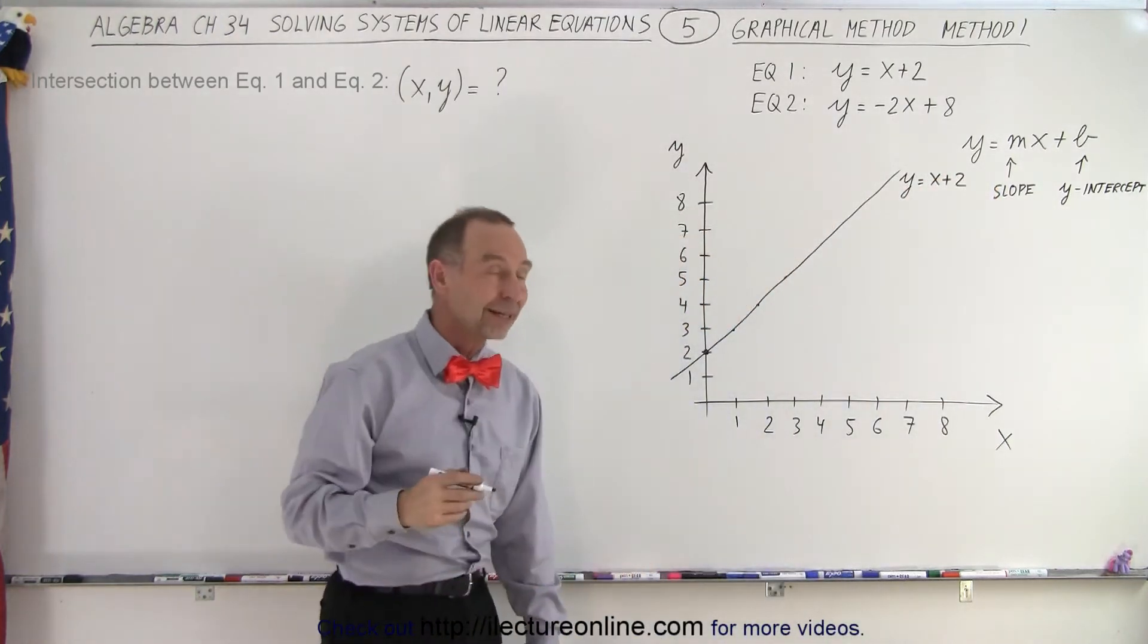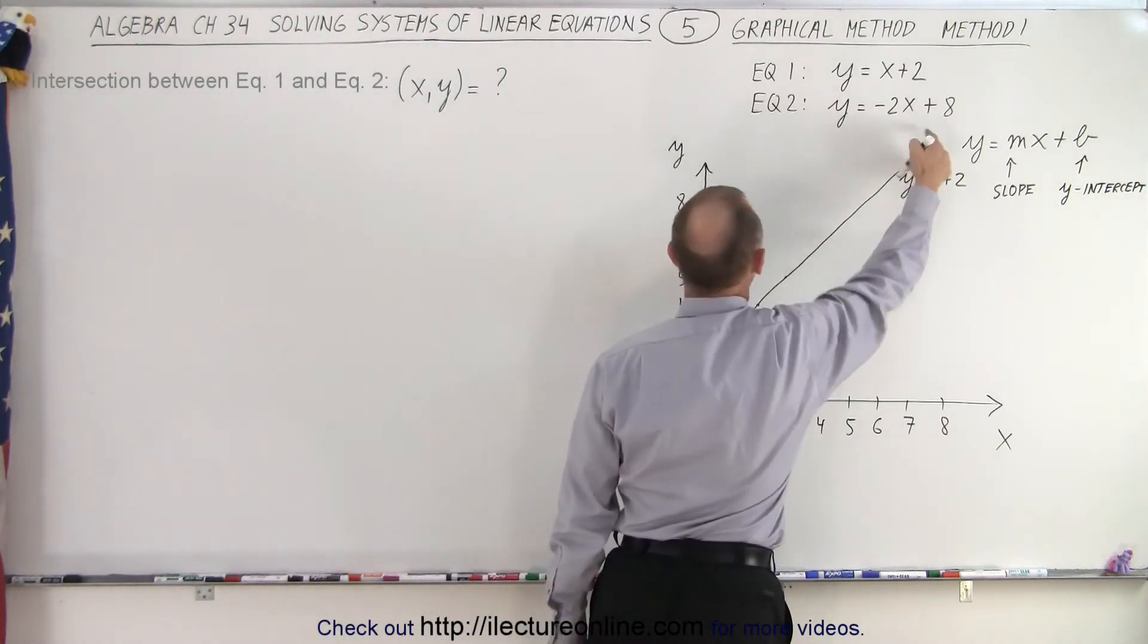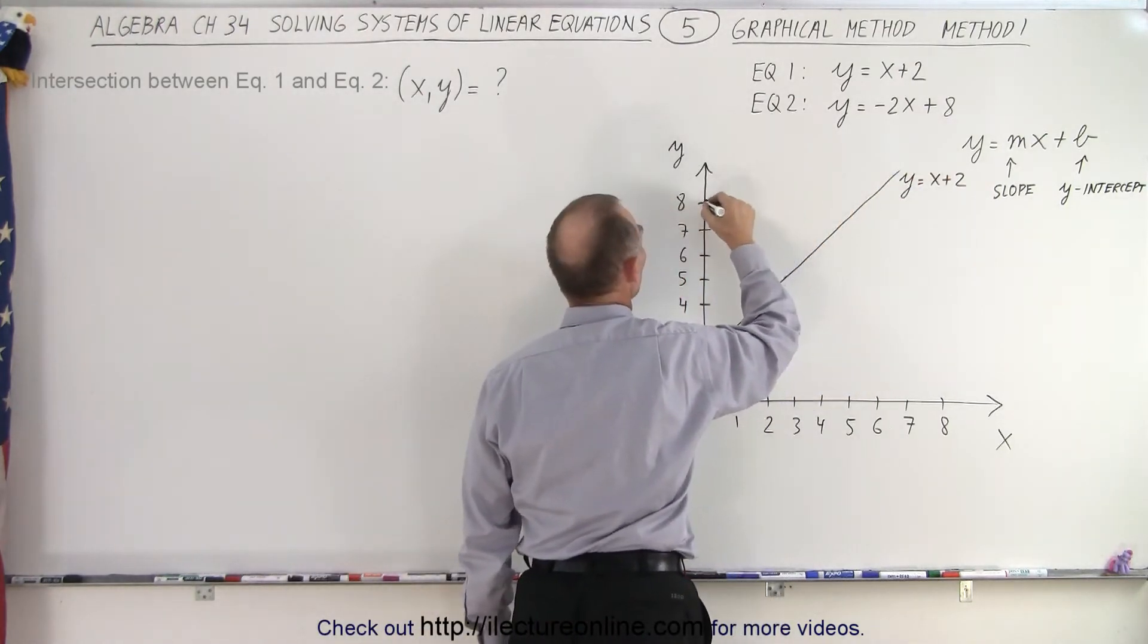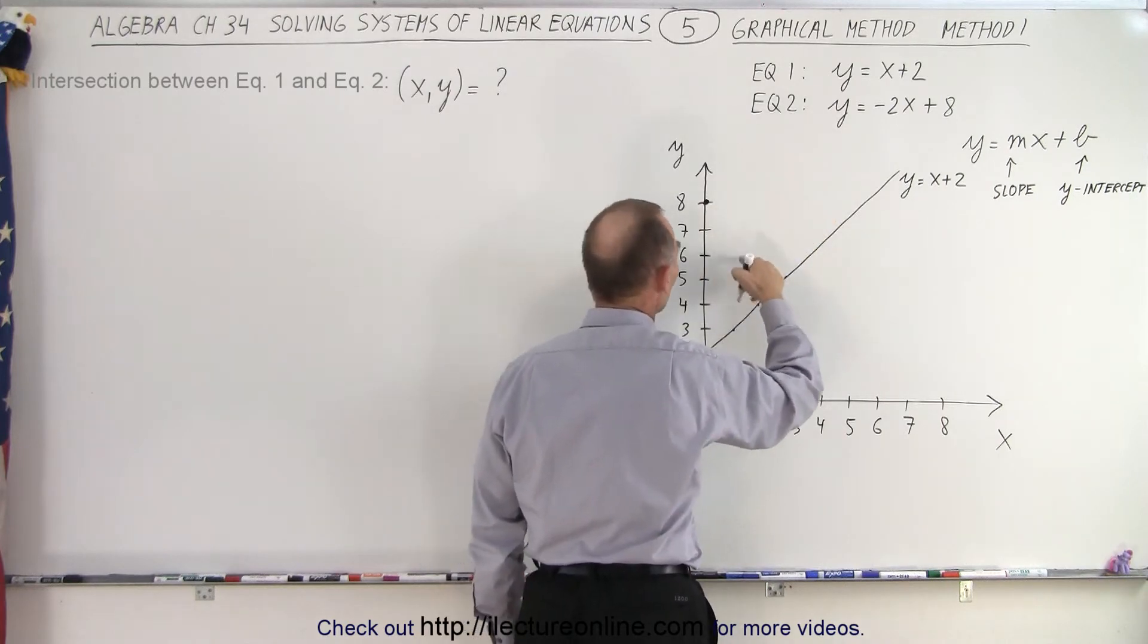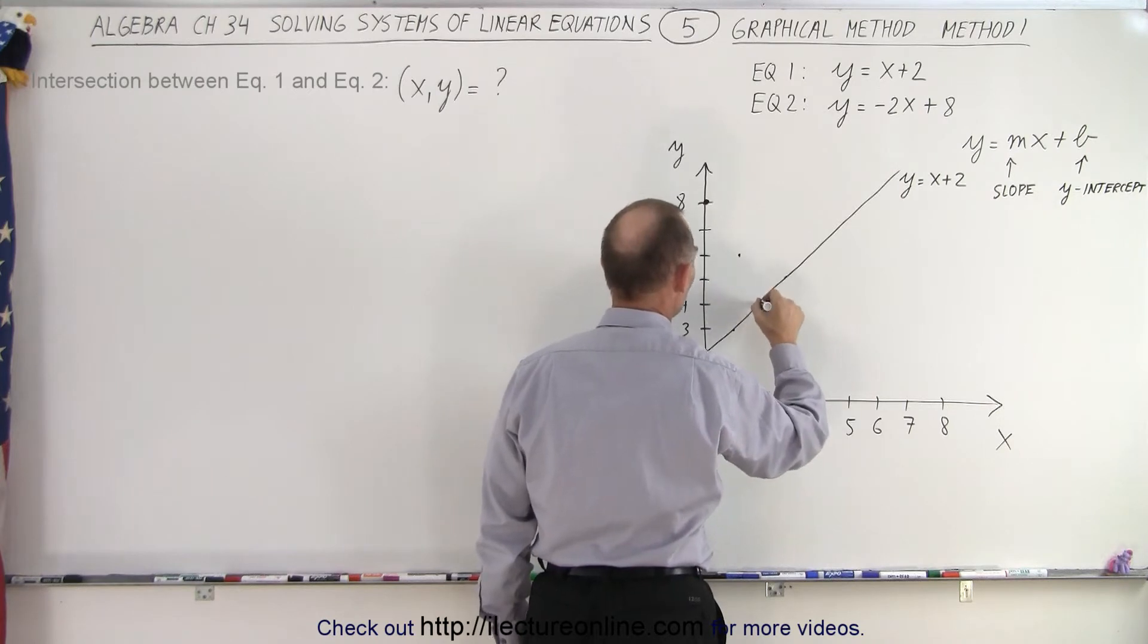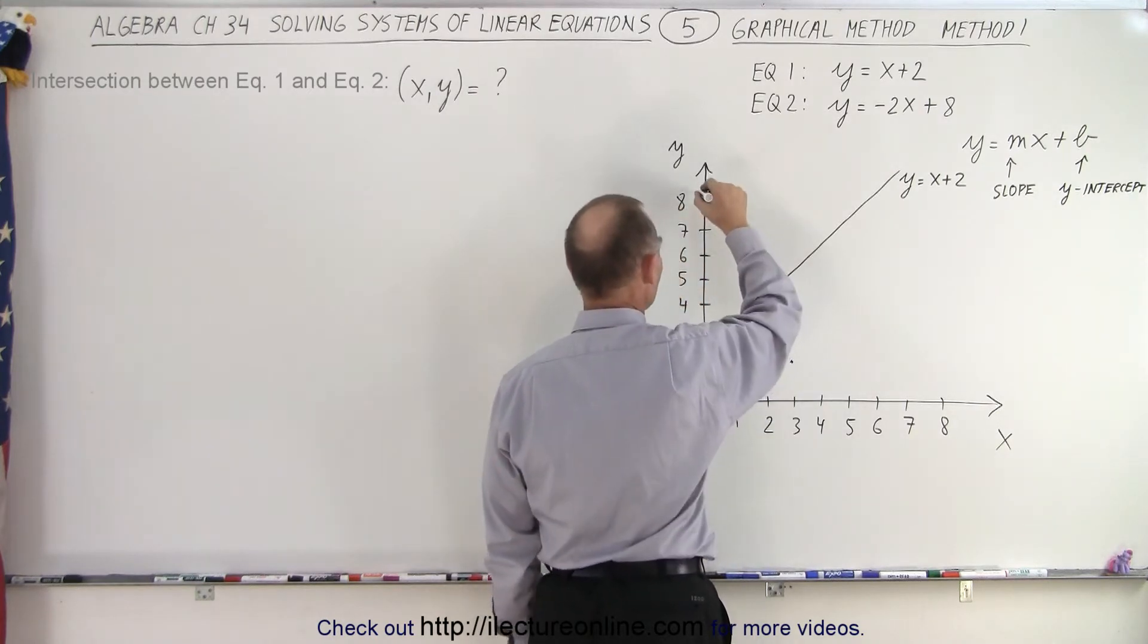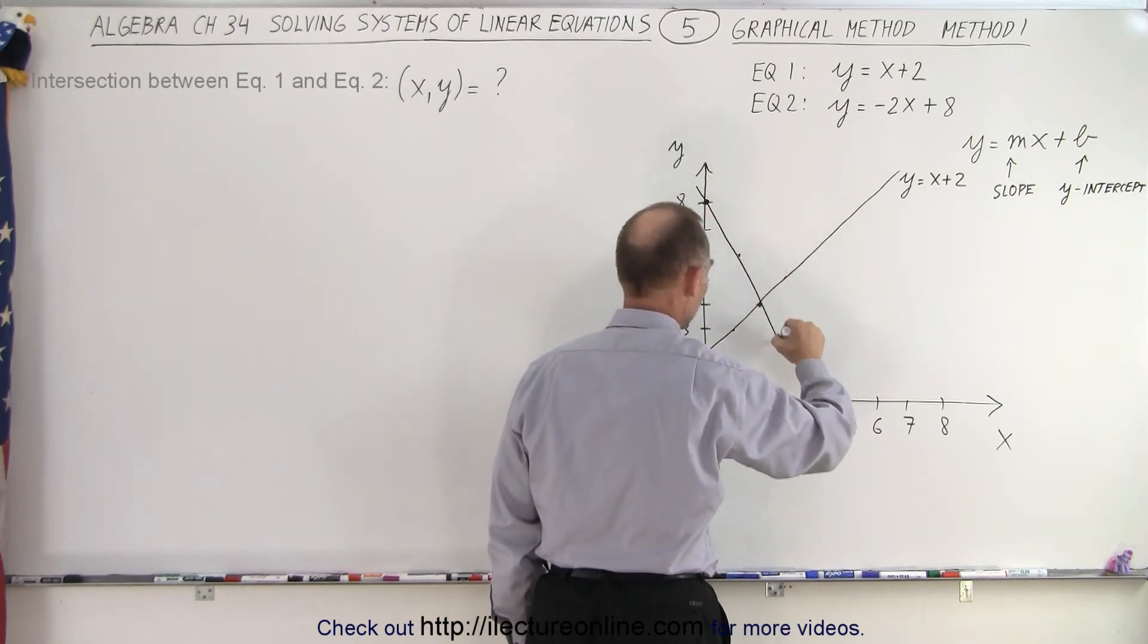So now we need a second line representing the second equation. The y-intercept is 8 and the slope is negative 2. That means a drop of 2 and a run of 1. So drop 2, run 1, drop 2, run 1, drop 2, run 1. If we connect all those dots like this, notice the two lines cross at one particular point.